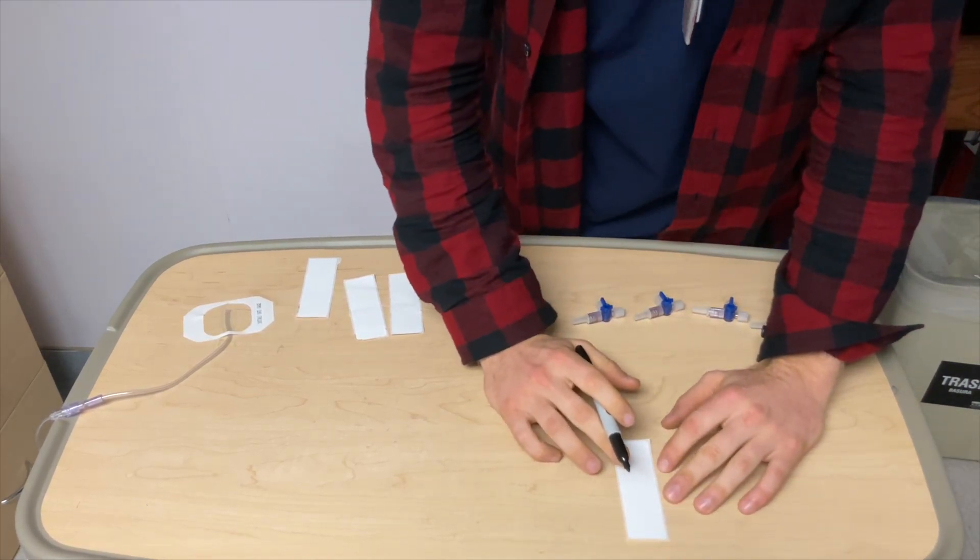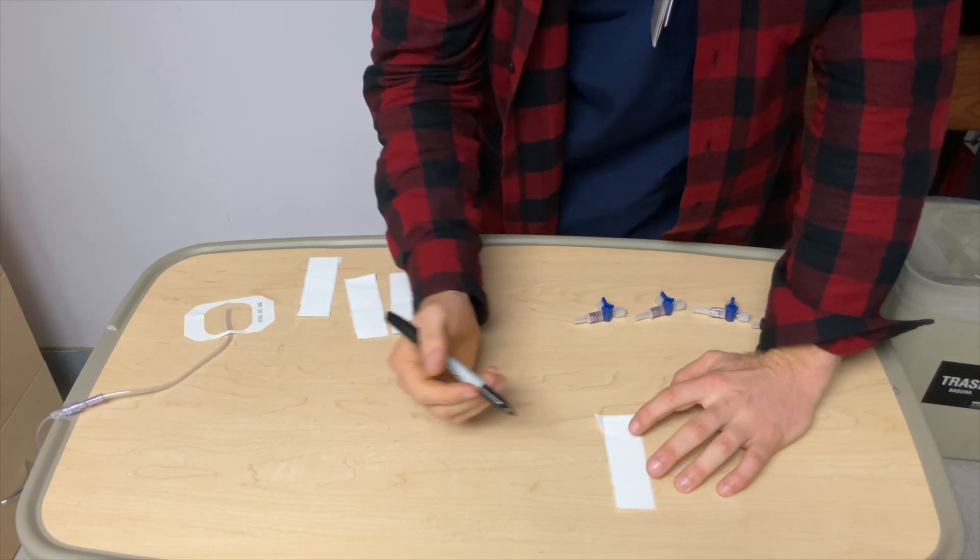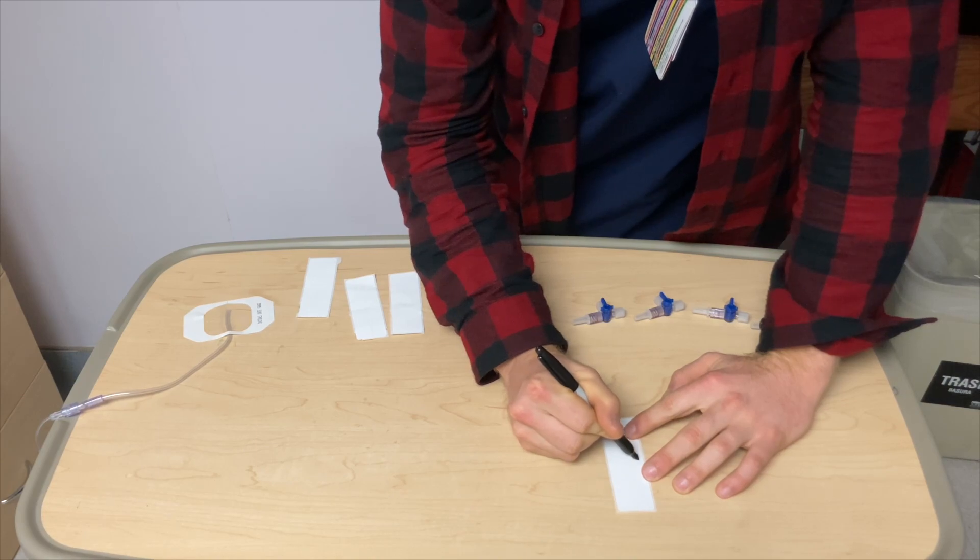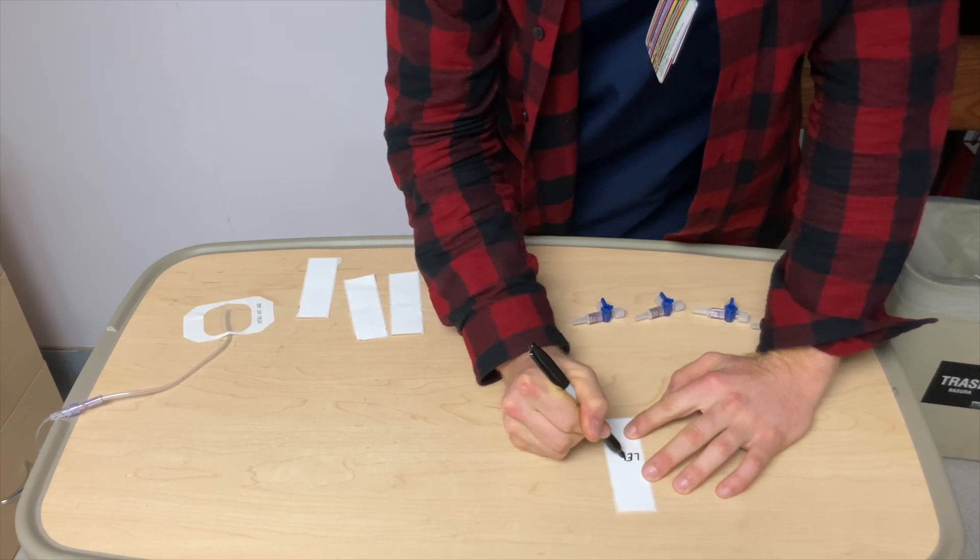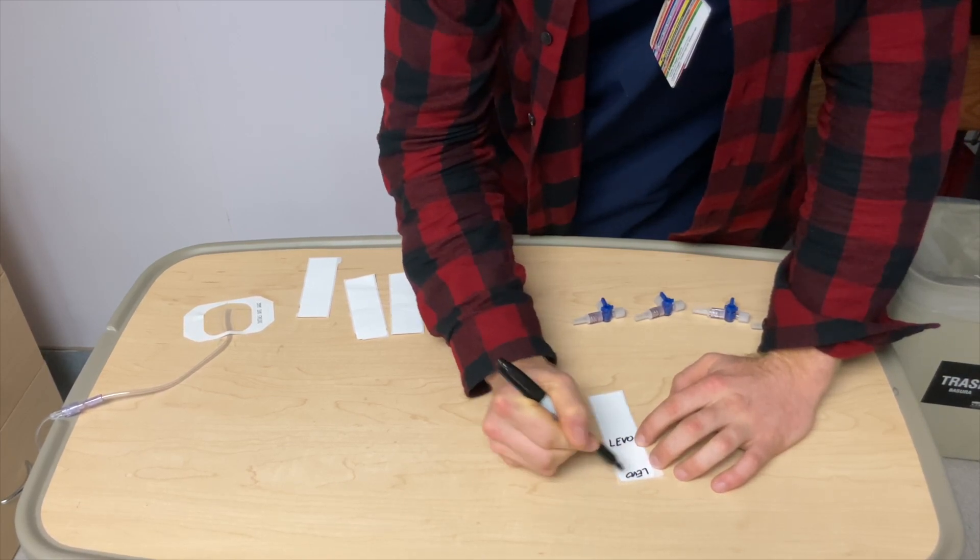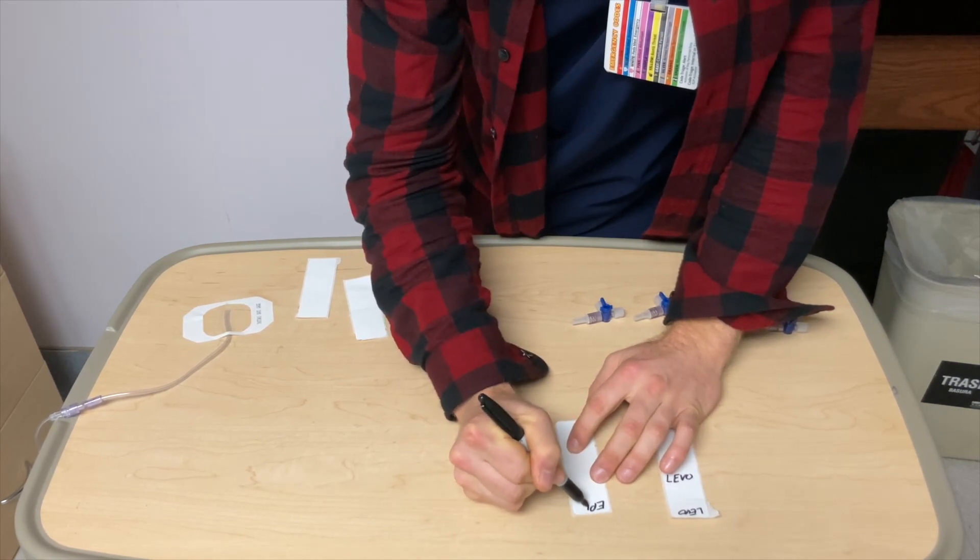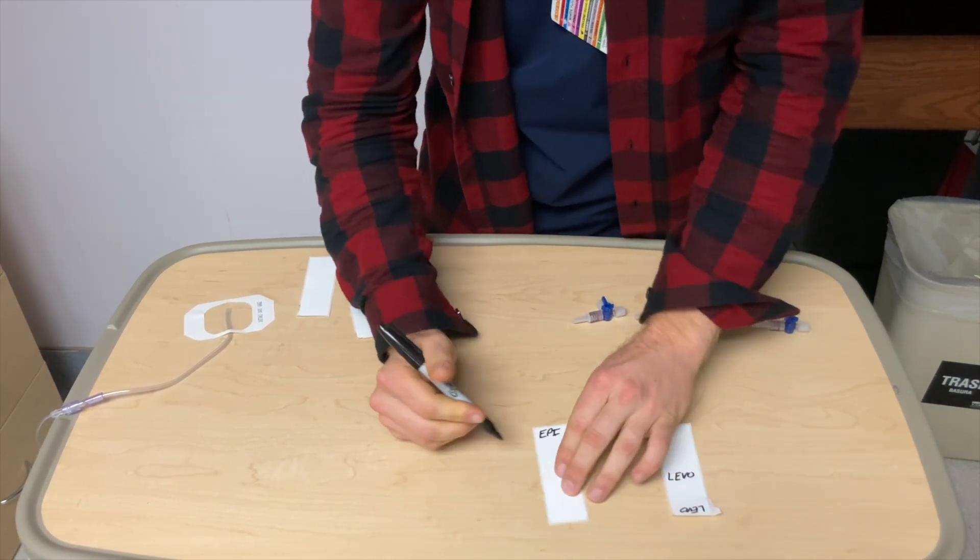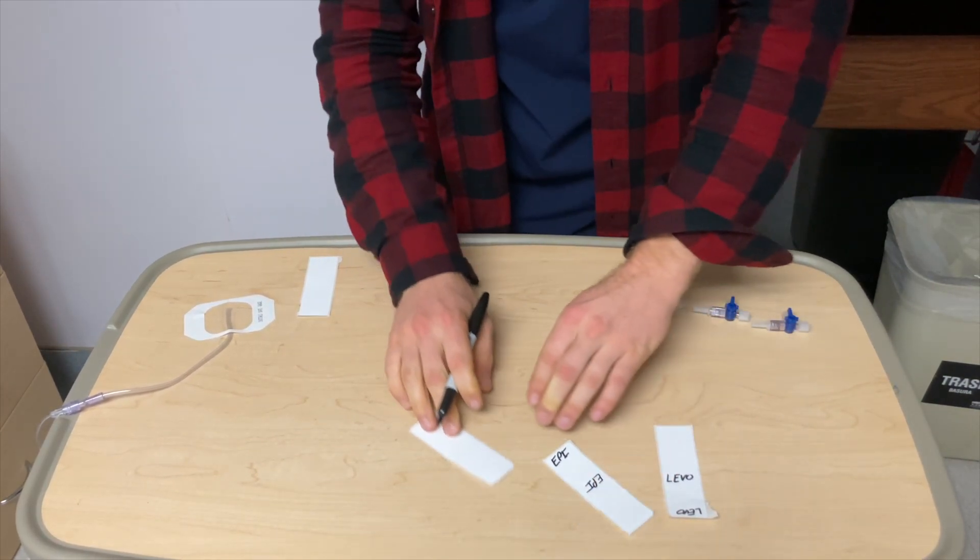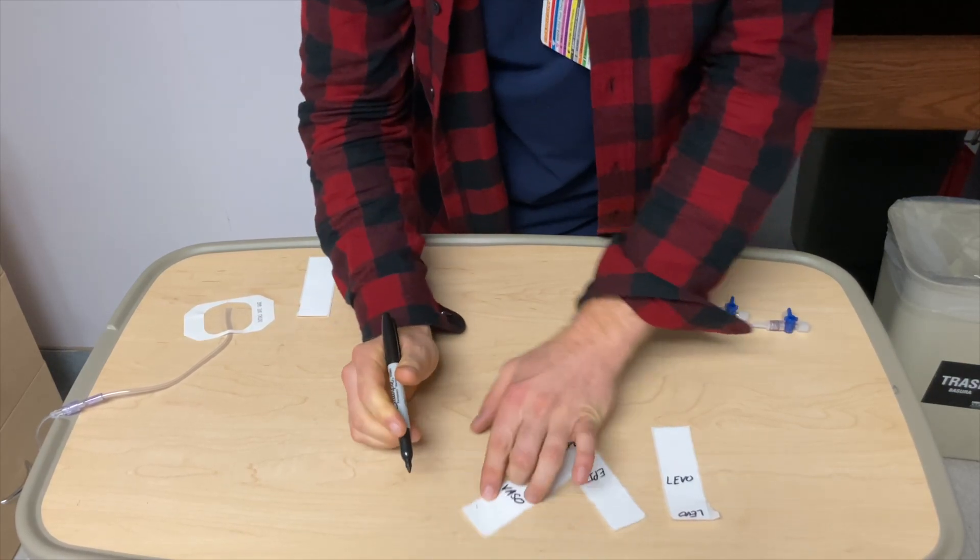So first thing I like to do is I like to grab lab labels because they are waterproof. And so the first thing I'm going to do is for our major vasopressors, so norepinephrine or levophed, I write in all caps, LEVO. I do it like this, L-E-V-O, so everybody can see it. And then we're going to do EPI for epinephrine, like this. And then we're going to do VASO for vasopressin.